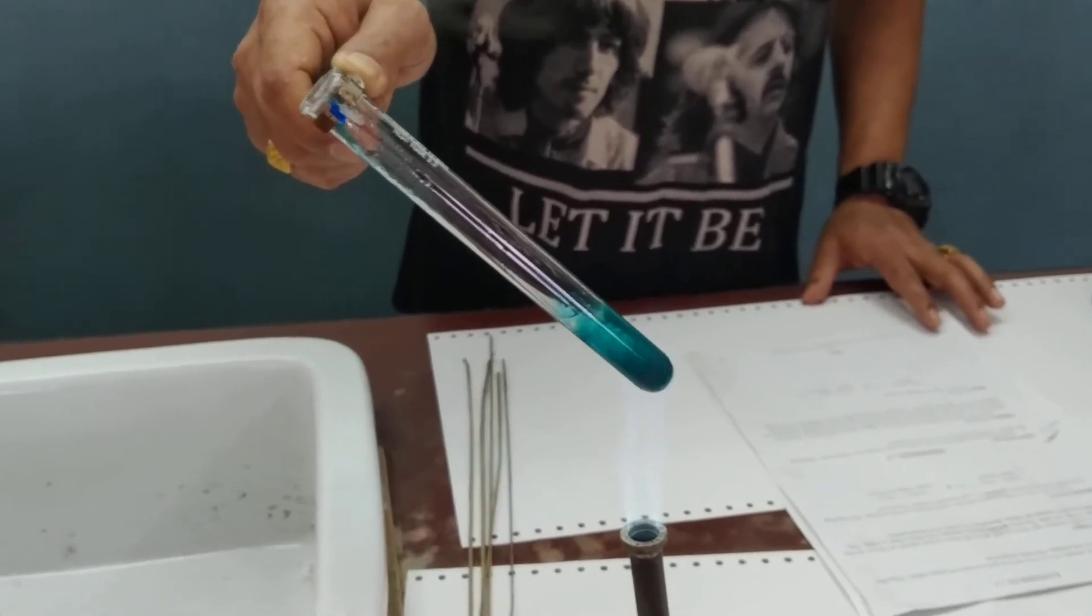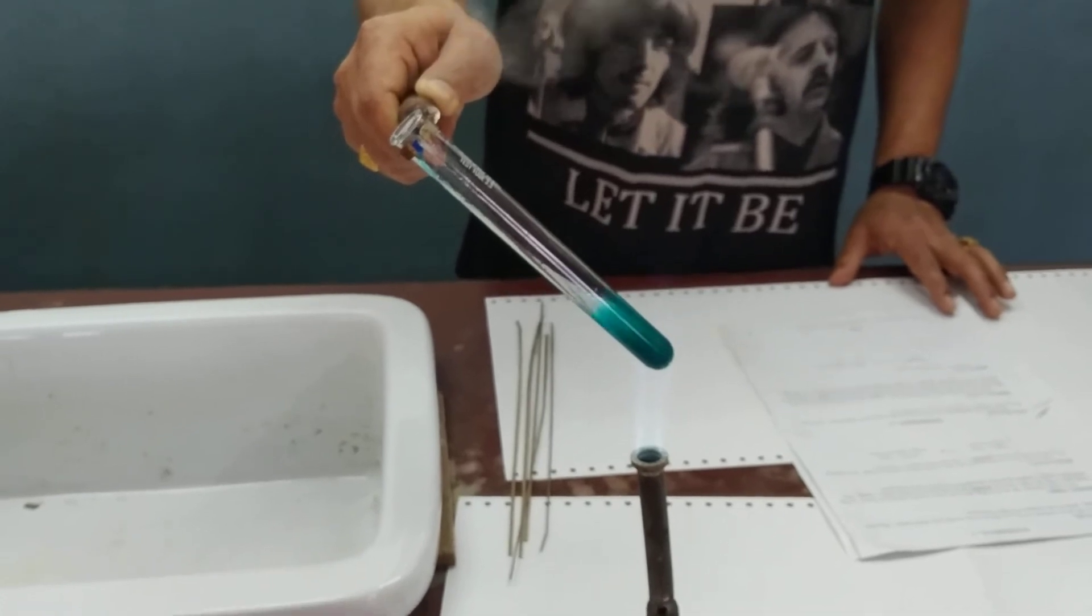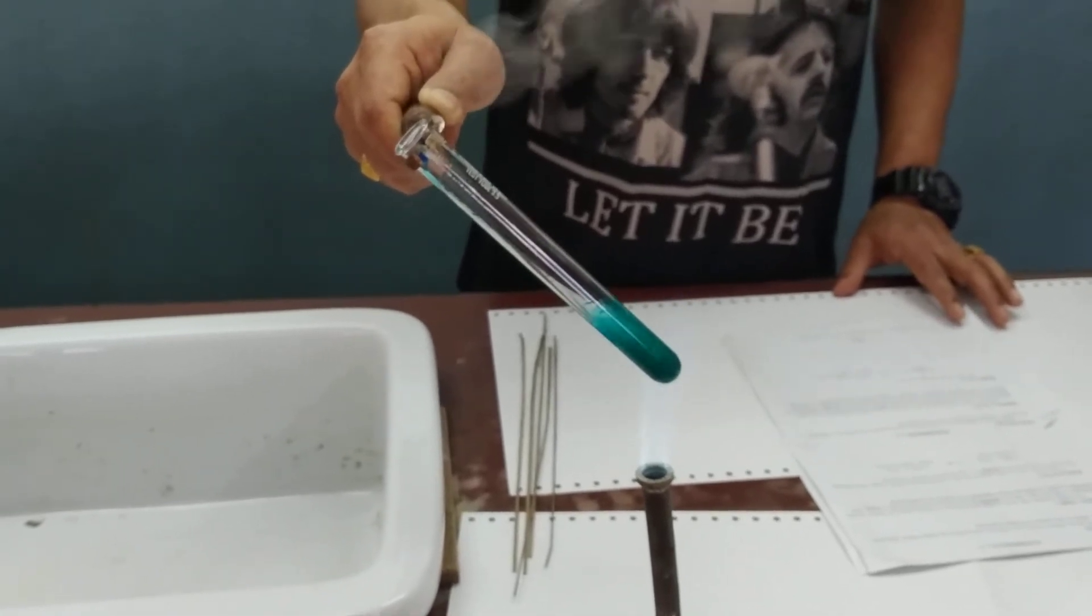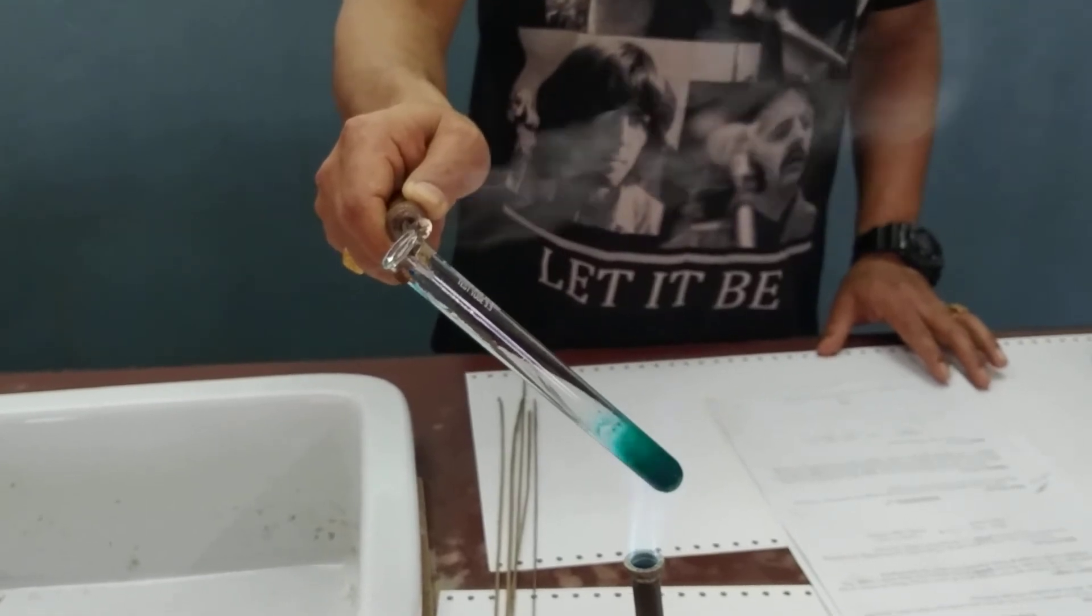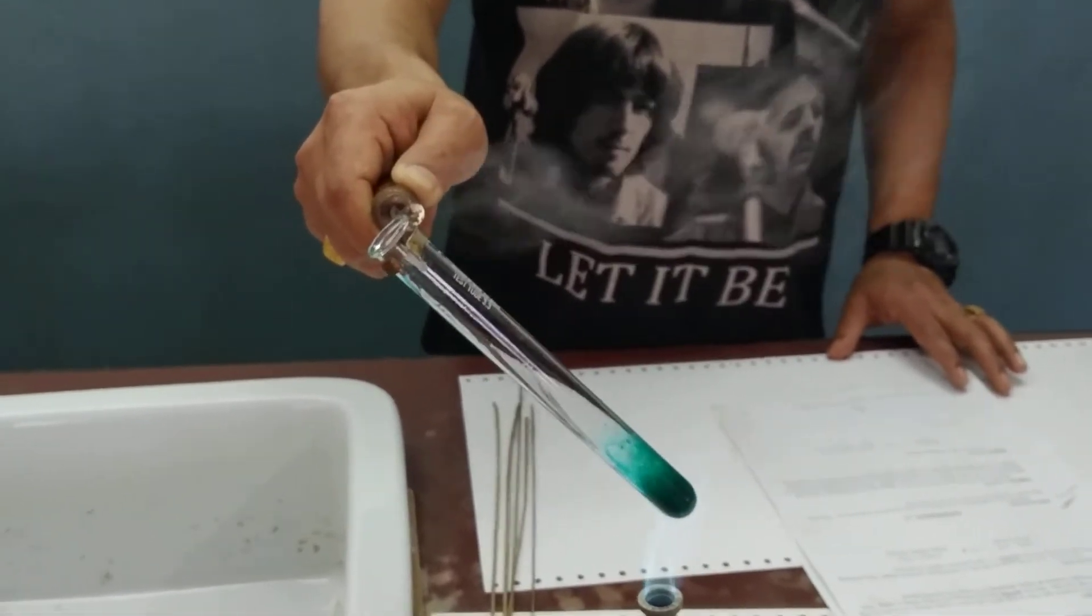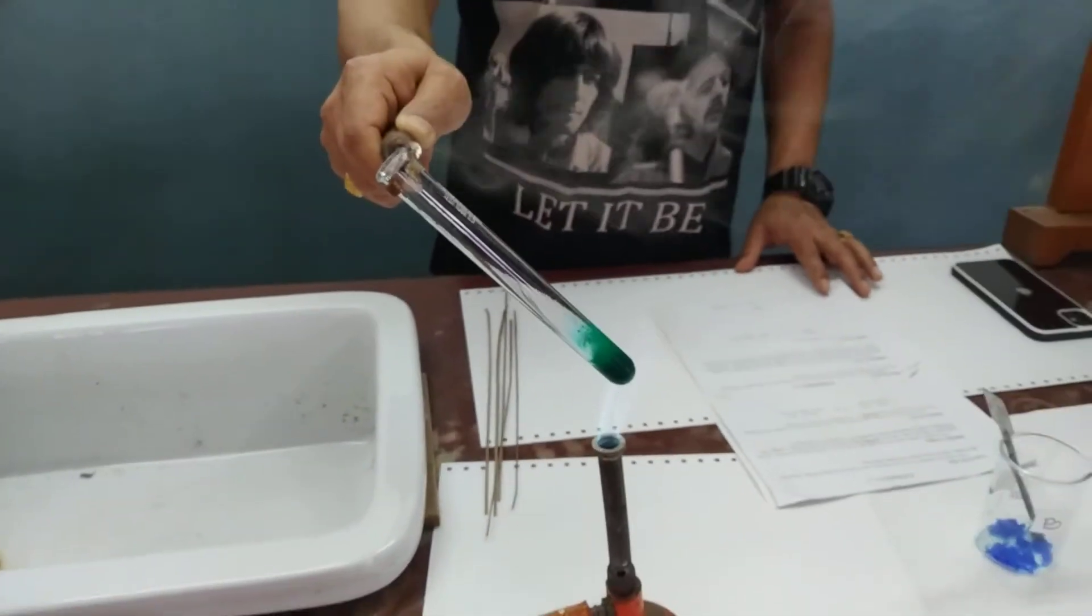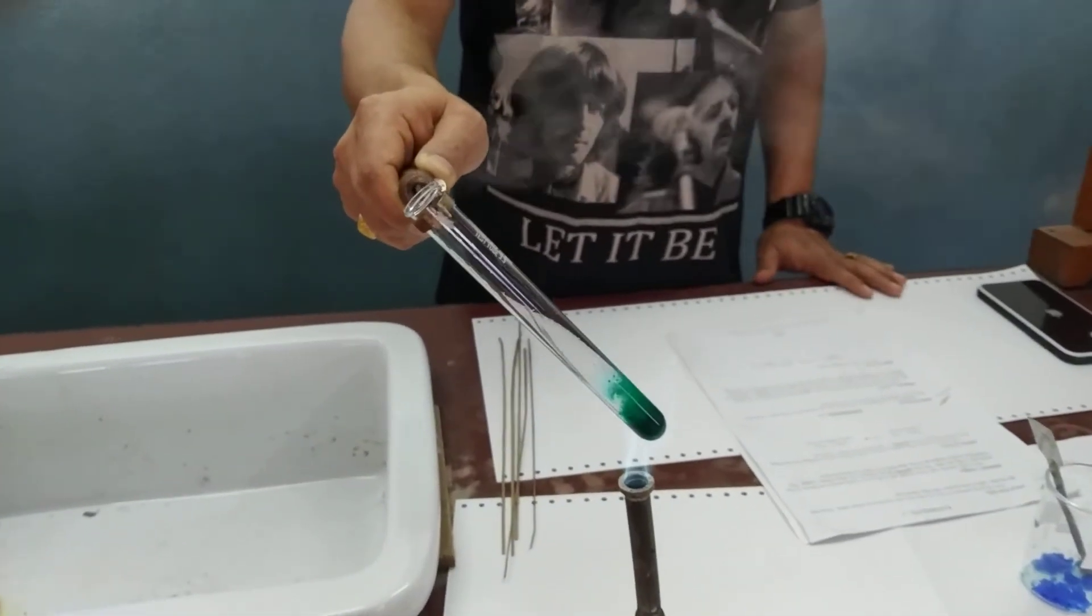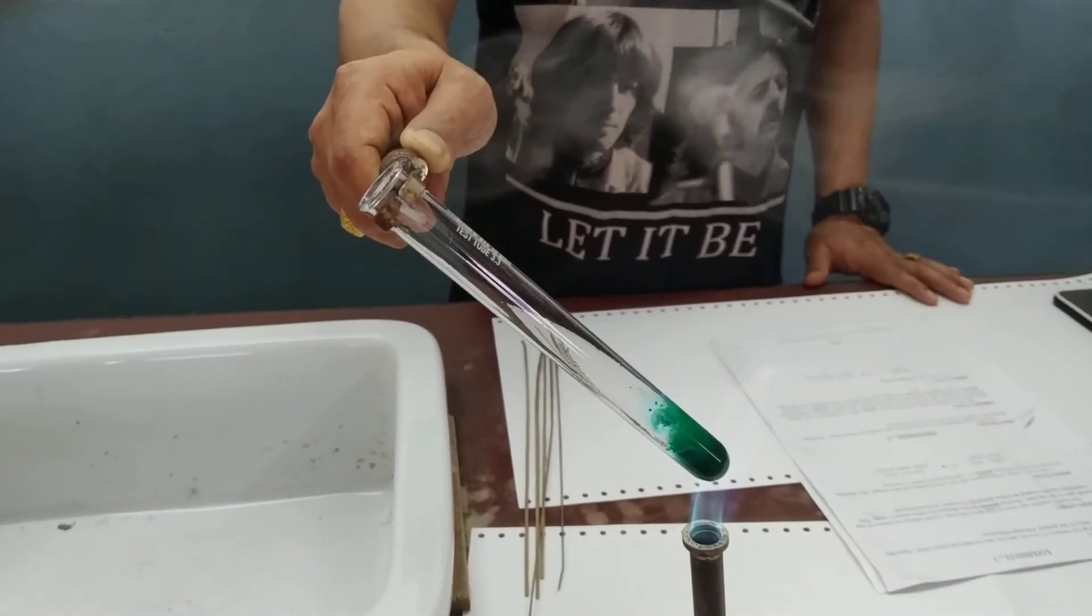On further heating, reddish brown fumes of nitrogen dioxide will be liberated. Another colorless gas which can rekindle a glowing splint will also be evolved. We are still waiting to observe these reddish brown fumes.